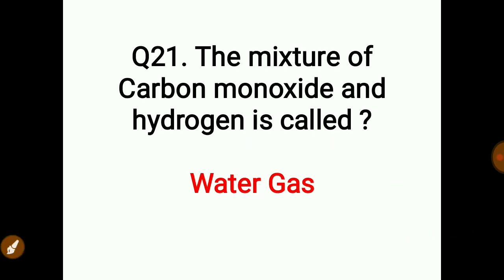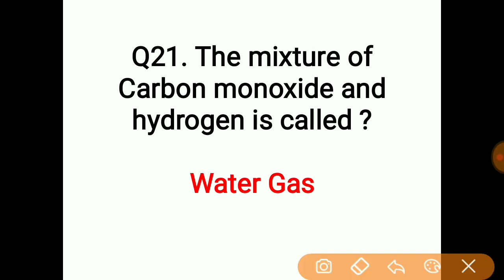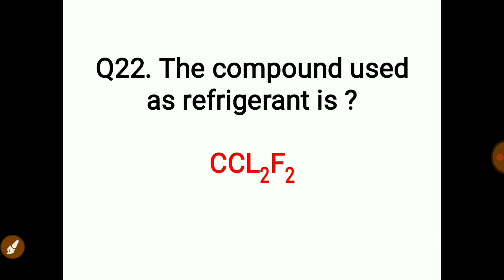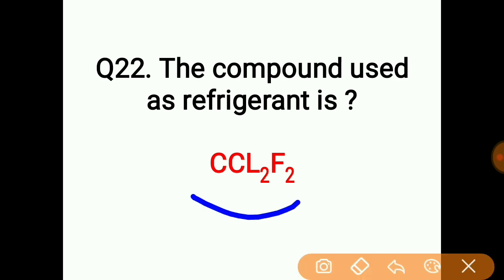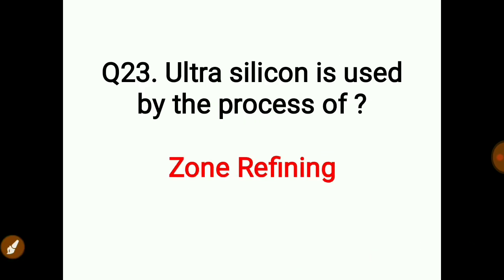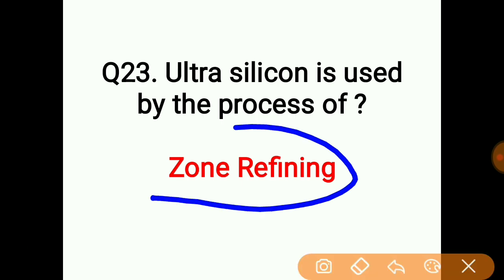The mixture of carbon monoxide and hydrogen is called water gas (CO + H2). The compound used as a refrigerant is CCl2F2, also known as dichlorodifluoromethane. Ultra-pure silicon is obtained by the process of zone refining.